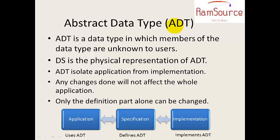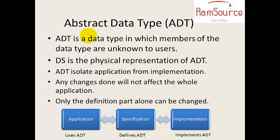And abstract data type — what is it? Abstract means the data structure is a physical representation of ADT. So if you know the data type, you can store the values. Data structure is a physical representation of ADT, meaning we organize it in the data structure. If you organize it, you can use abstract data types. There are n number of abstract data types.